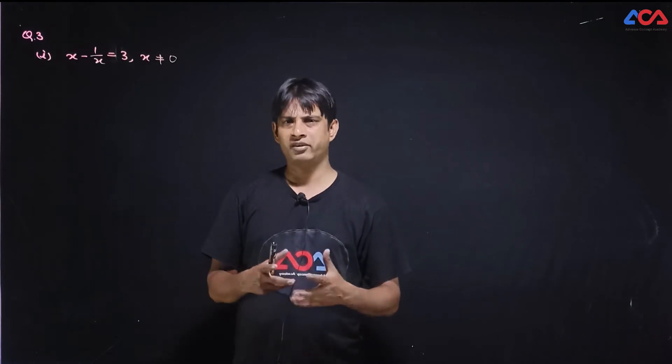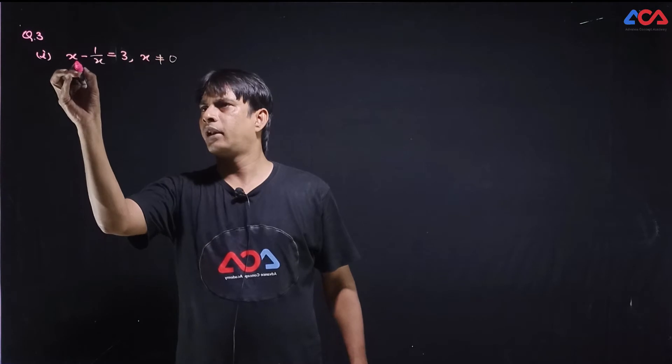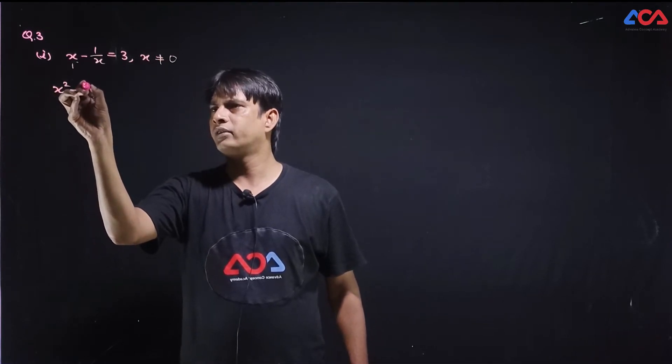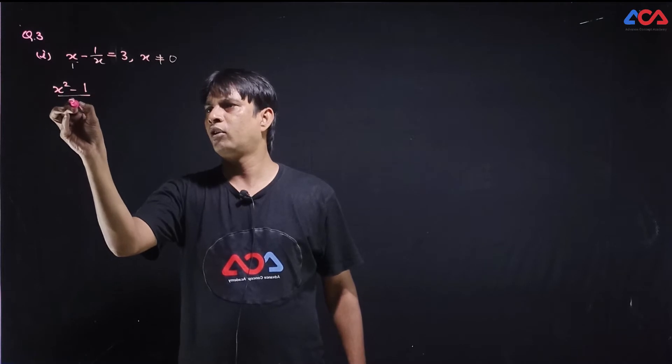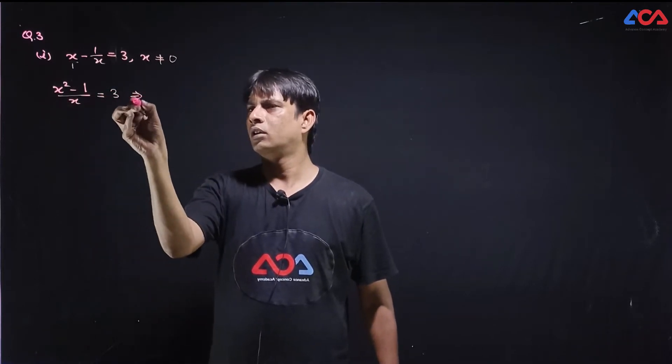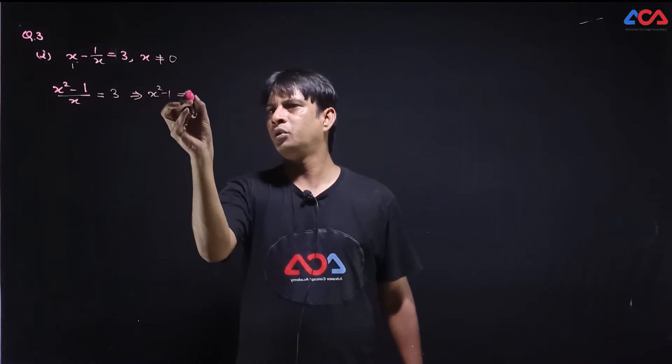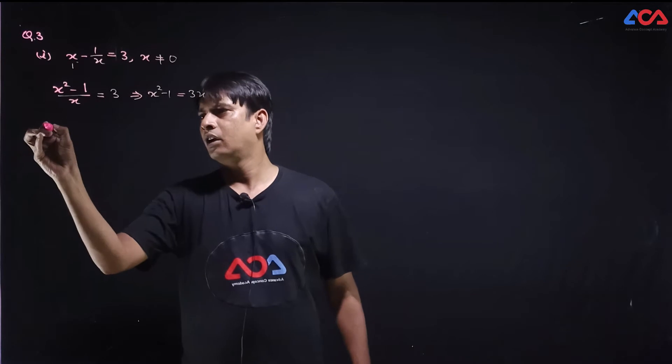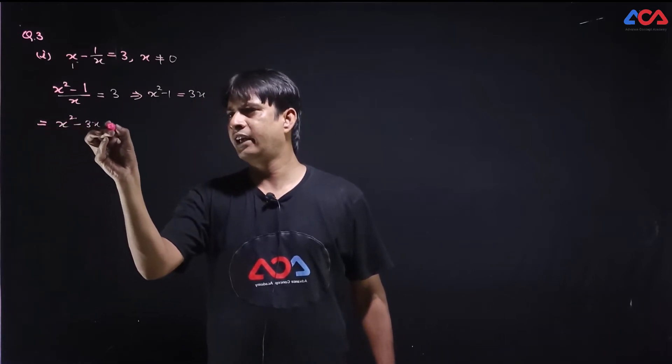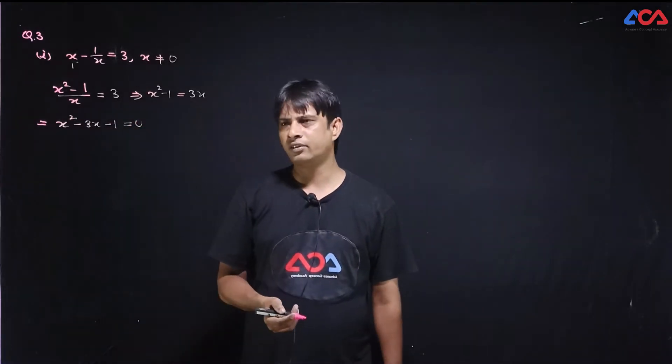It is your choice. How can you do it? So first part, cross multiply. Then x square minus 1 upon x which is equal to 3. Therefore x square minus 1 which is equal to 3x. We can say this to x square minus 3x minus 1 which is equal to 0. Now we have to factorize.